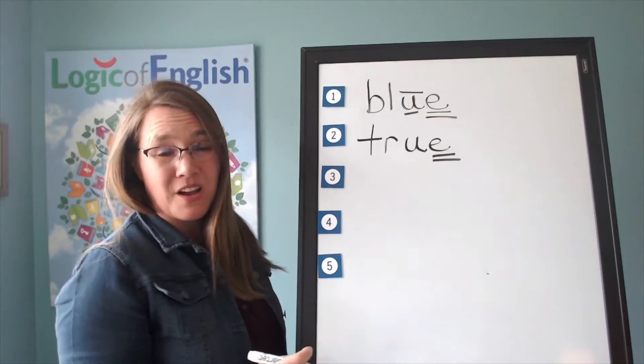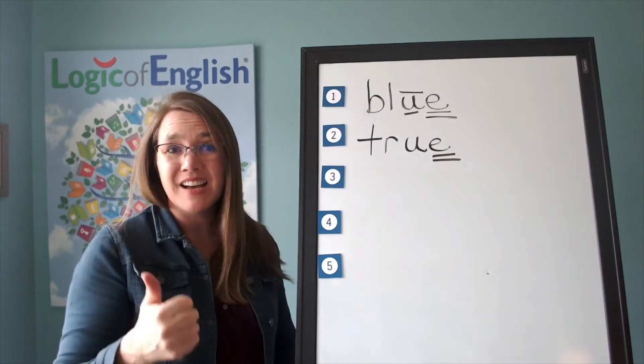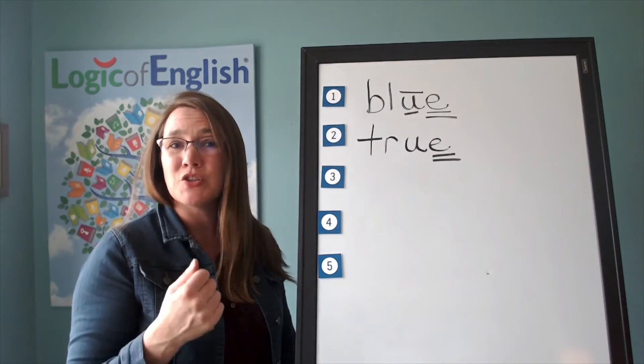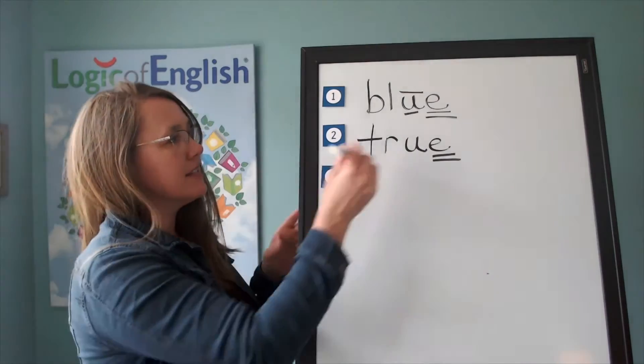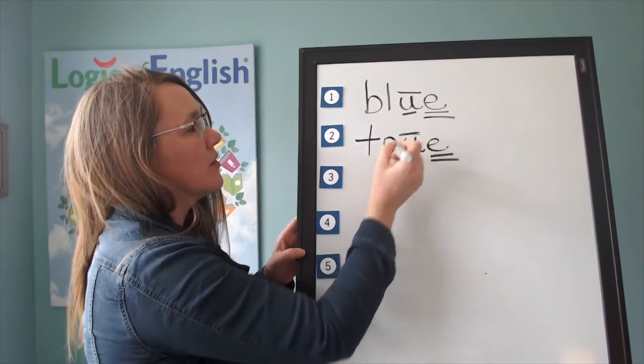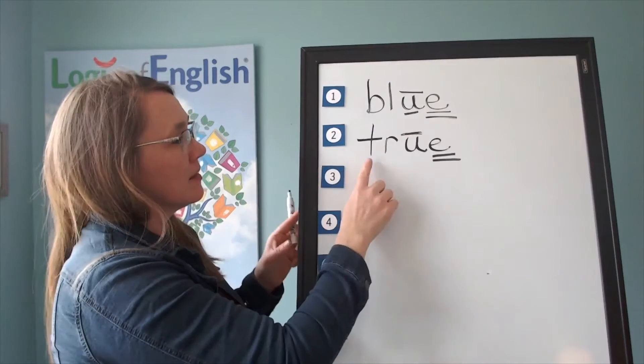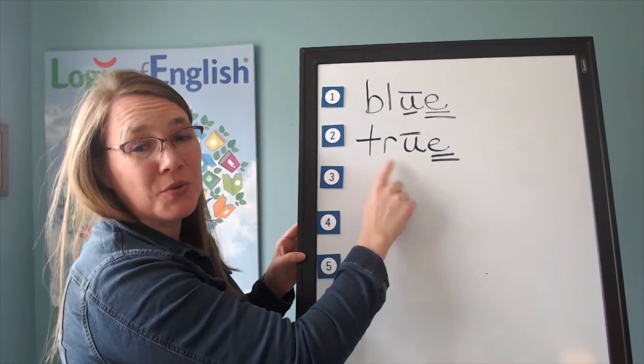Also, what sound of U is that saying? Uh, U, oo, uh. True. Wow, it's saying its second long sound there. So we'll put a line over it to show us that. Let's read it. Tuh, ur, oo. True.